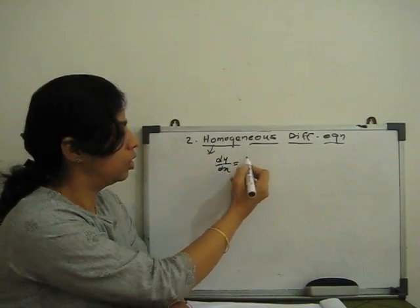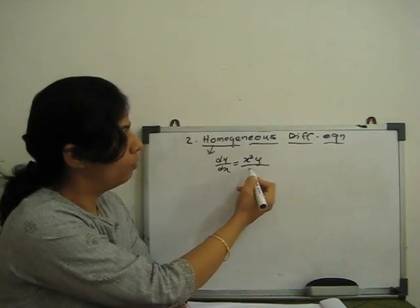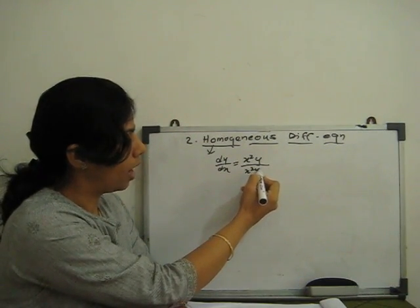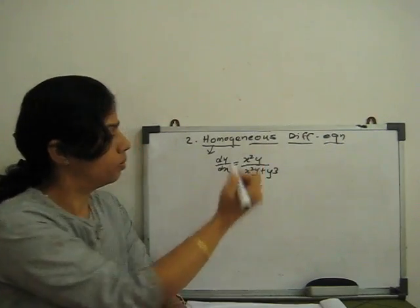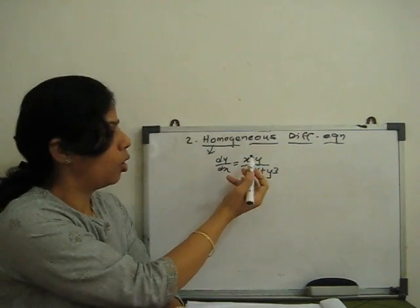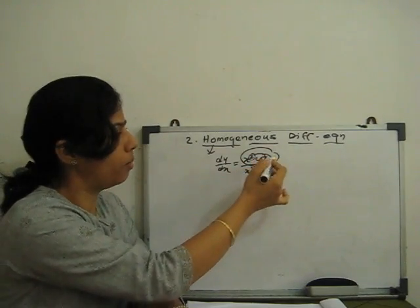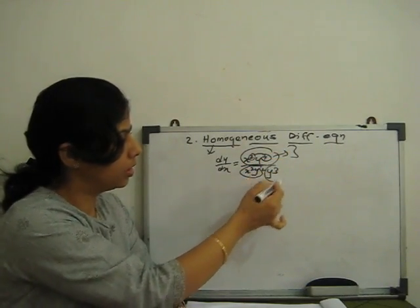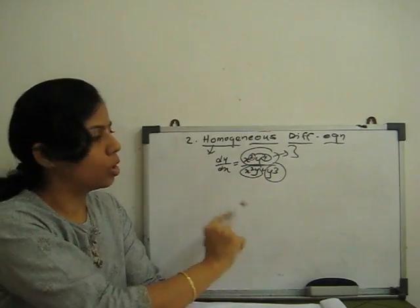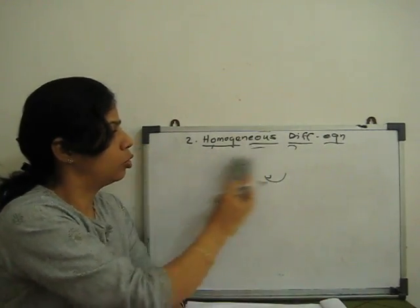For example, if we have dy/dx equal to x²y in the numerator, then in the denominator we also have something like x²y plus y³. Is this a homogeneous function? Yes, because the power of the term x²y is 3, this term's power is 3, and this term's power is 3. So this is a homogeneous function of x and y where all variable powers are the same.